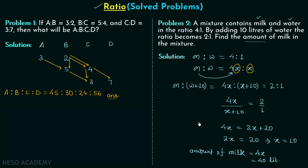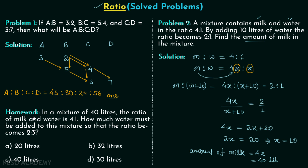For the homework problem, we again have a mixture of water and milk. The total amount of mixture is 40 liters and the ratio of milk to water is 4:1. How much water must be added so that the ratio becomes 2:3? There are four options — try to find the correct one and post your answer in the comment section. That's all for this lecture, see you in the next one.